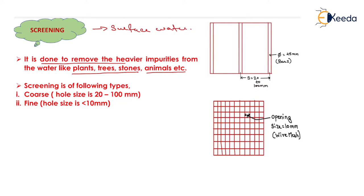What are the types of screen used in the screening process? There are two types of screen. The first one is the coarse screen, which is also known as the trash screen. It is generally made up of bars of 25 mm diameter, having center-to-center spacing of 20 to 100 mm. The next one is the fine screen or mesh screen, which has an opening size less than or equal to 10 mm.